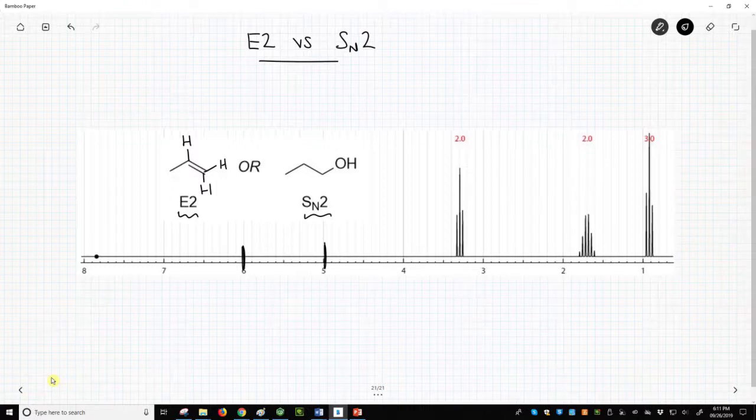Let's look further at the SN2 product. Keep in mind that nmrdb spectra do not show OH or NH signals. The alcohol product has a CH3, CH2, and another CH2.